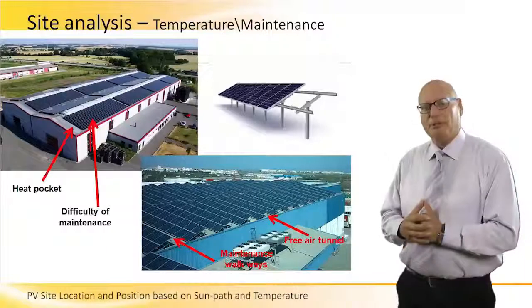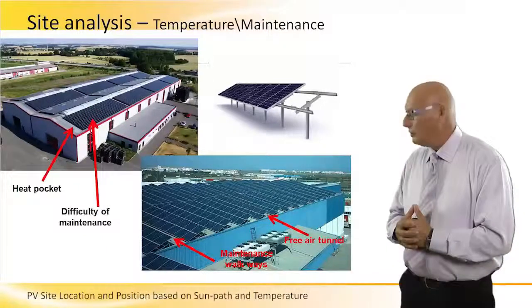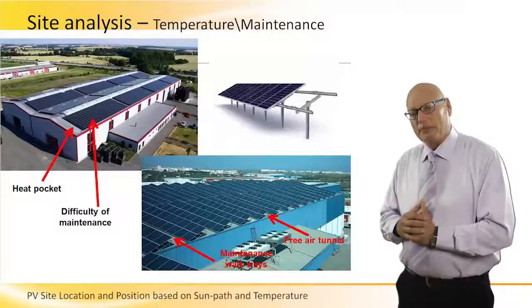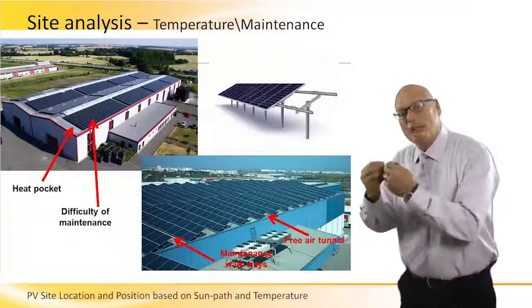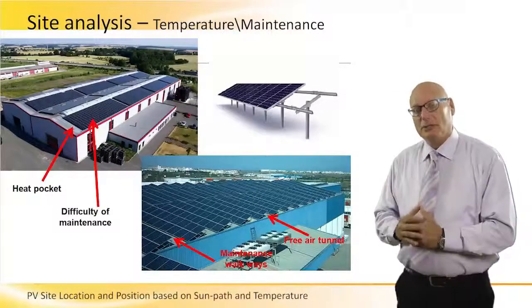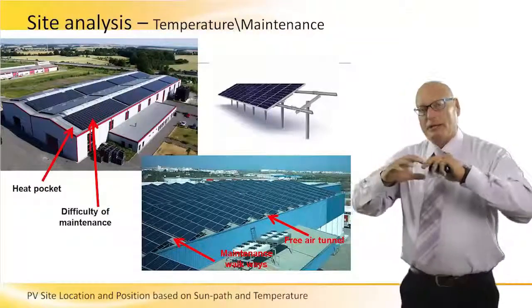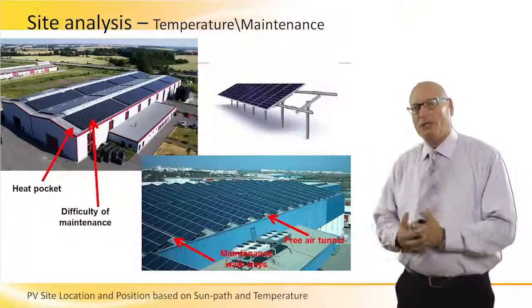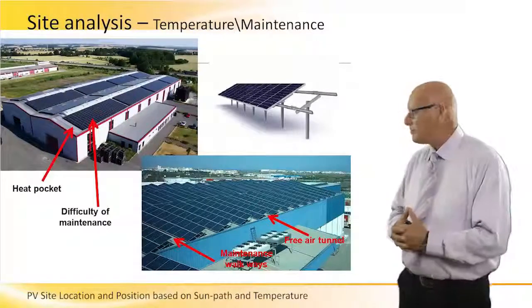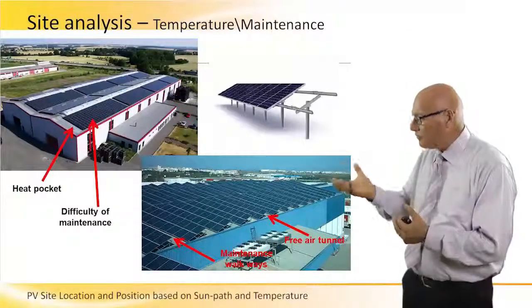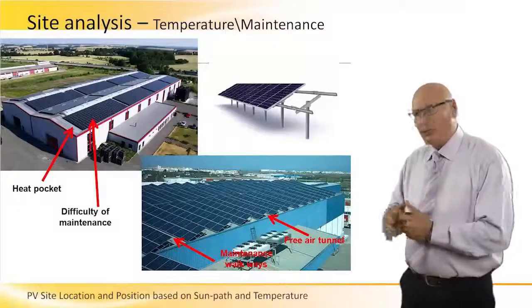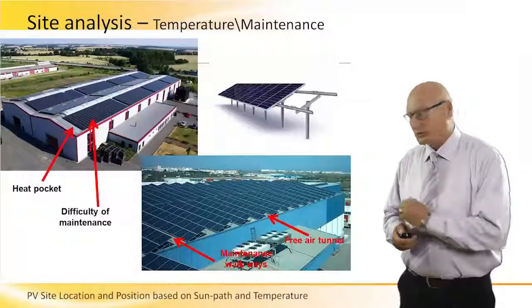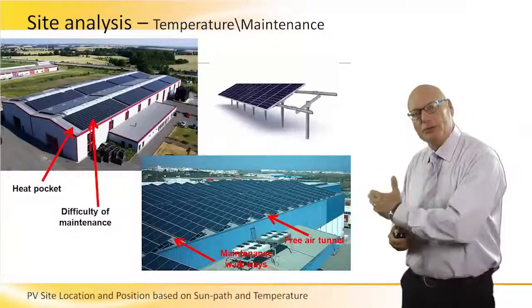A good example is the picture on the bottom right. The same amount of energy is being produced — in other words the same number of panels, the same nominal output power of the entire system — but it's configured in a different way that allows ventilation. So there's a bad example and a good example. This is the good example.